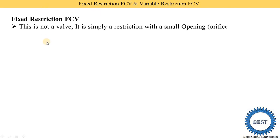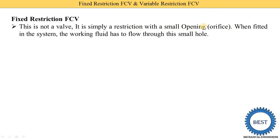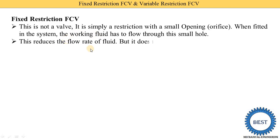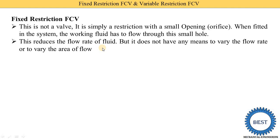Fixed restriction FCV is not a valve. It is simply a restriction with a small opening, meaning an orifice. In a pipe, restrictions are fitted and these restrictions have small holes provided. These small holes are called the orifice, which we already studied in fluid mechanics. When the orifice is fitted in the system, the working fluid has to flow through this small hole. This reduces the flow rate of the fluids — by using the fixed restriction FCV, we reduce the flow rate.